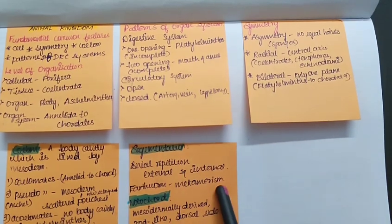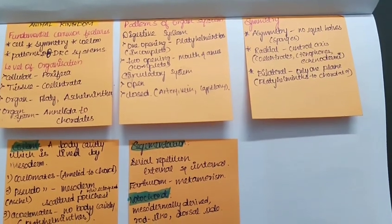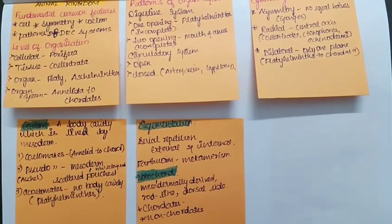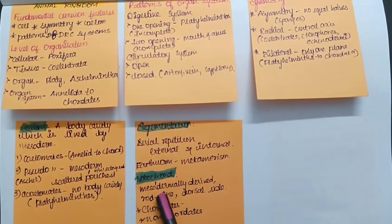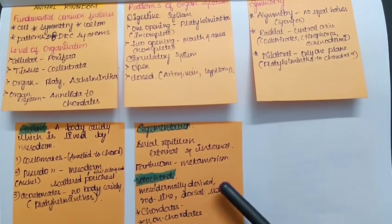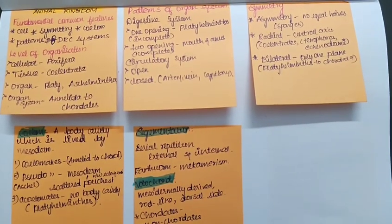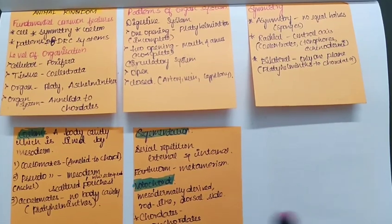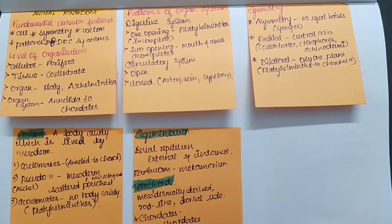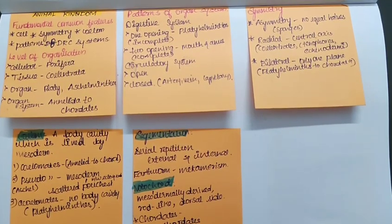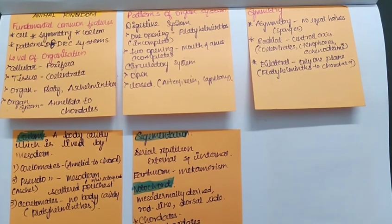Talking about the notochord, a notochord is mesodermally derived, rod-like dorsal side structure. This is the main character to divide the animals to chordates or non-chordates. Those who possess notochord are called as chordates, and the absence of notochord denotes they are non-chordates.